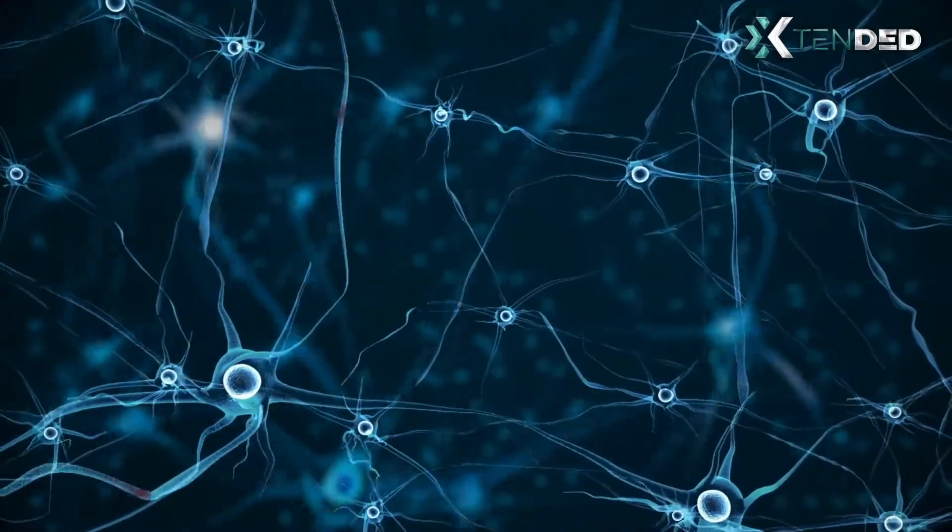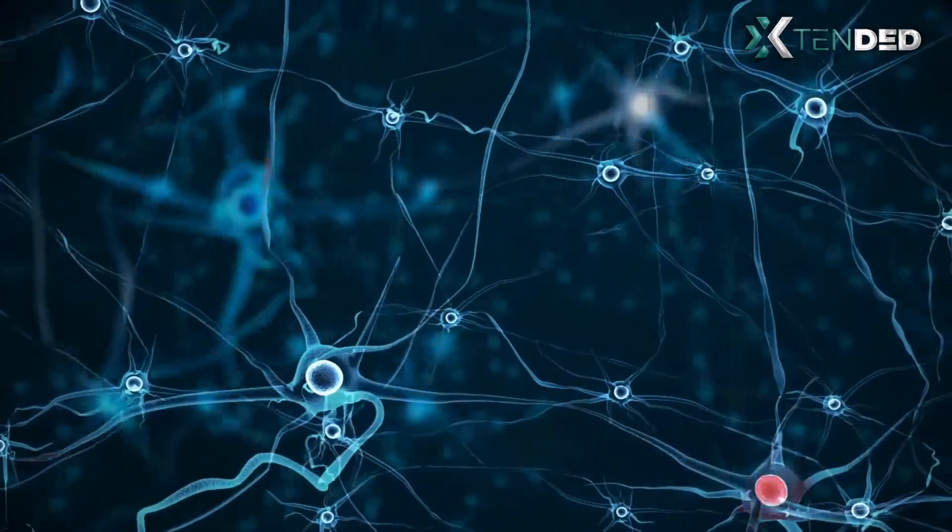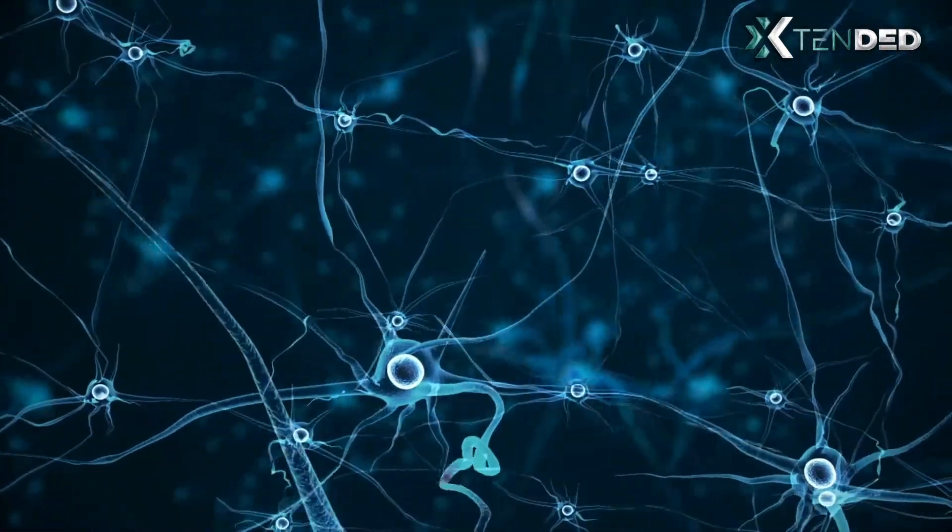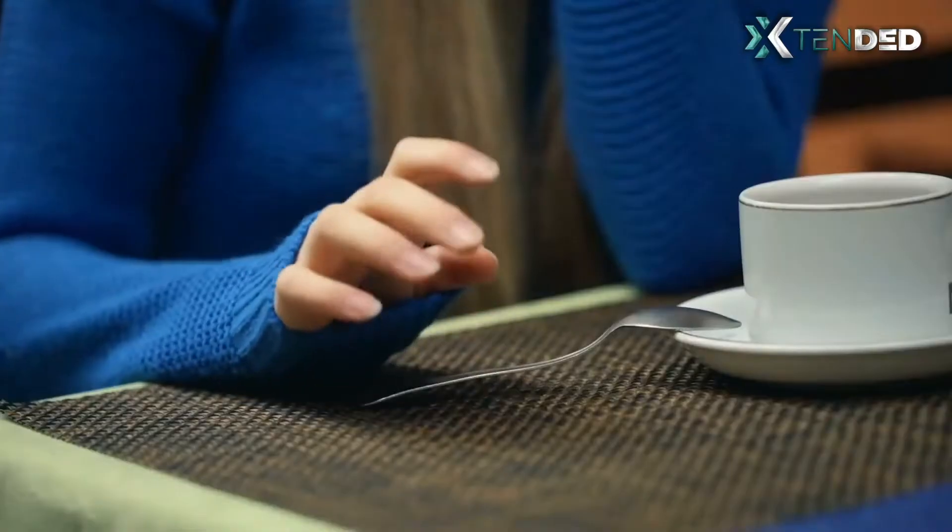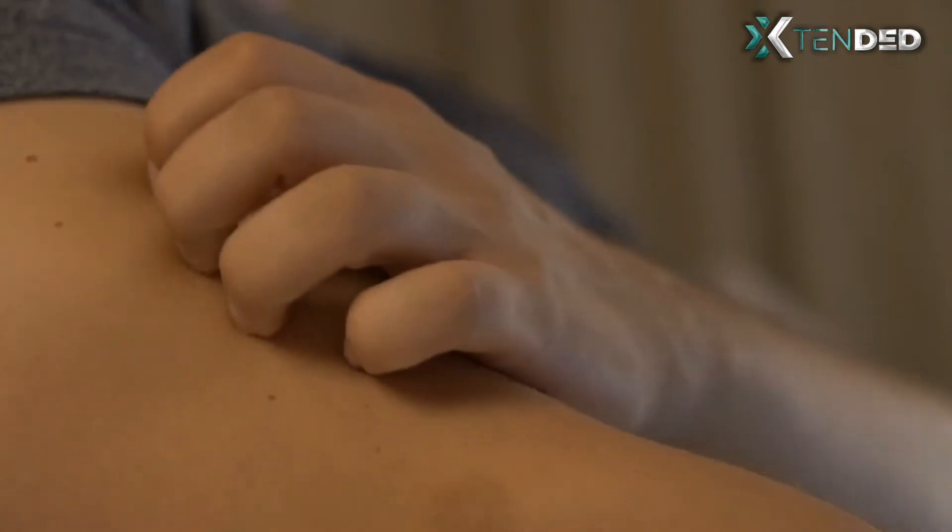As you're watching, these neurons continue their improvised dance creating every blink of an eye, tap of a finger and scratch of an itch you perform.